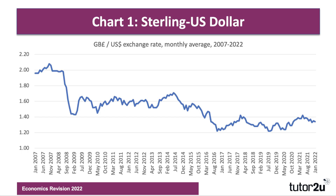A bit of background here on sterling against the US dollar. The pound was actually trading at over $2 to the pound in 2007 before the financial crisis. It then depreciated tremendously to about $1.40, stabilised at about $1.60, but again fell after the Brexit referendum in 2016. It's been trading at about $1.20–$1.30 over recent times — quite a long way down, about 15% lower than it was in 2015.